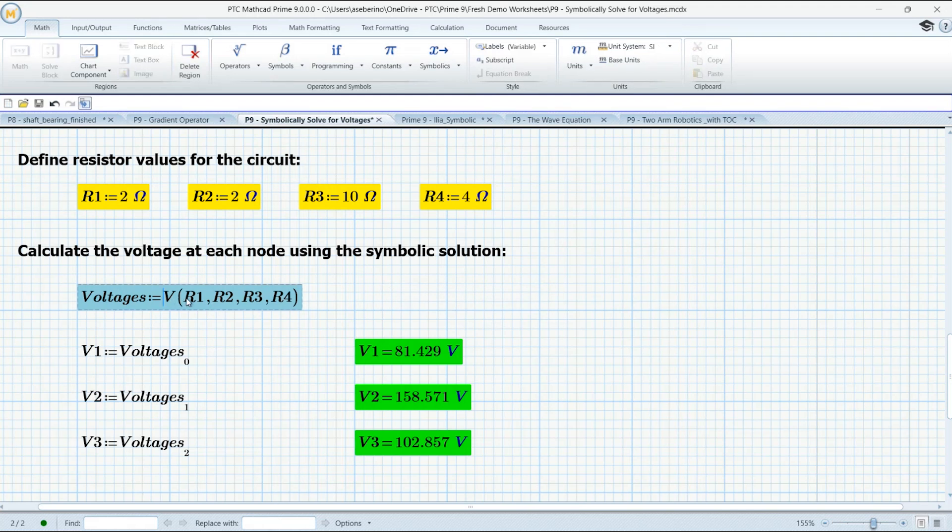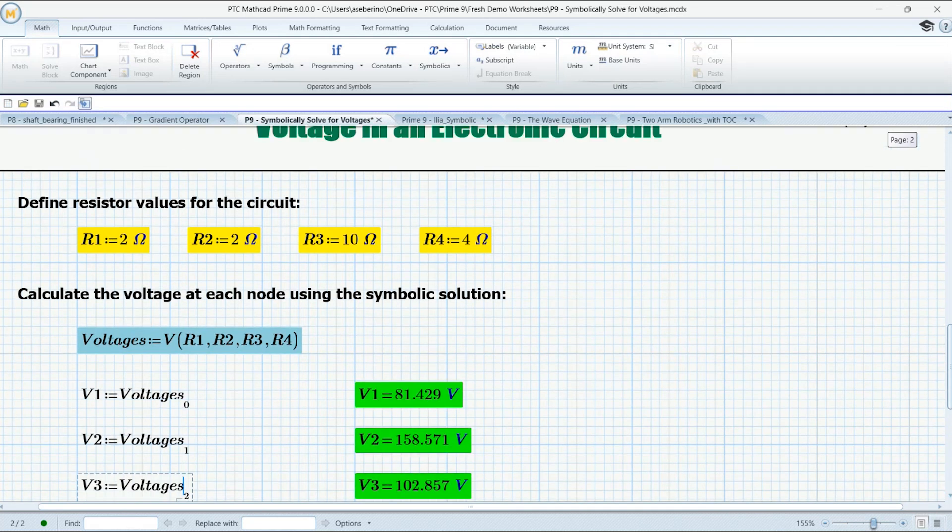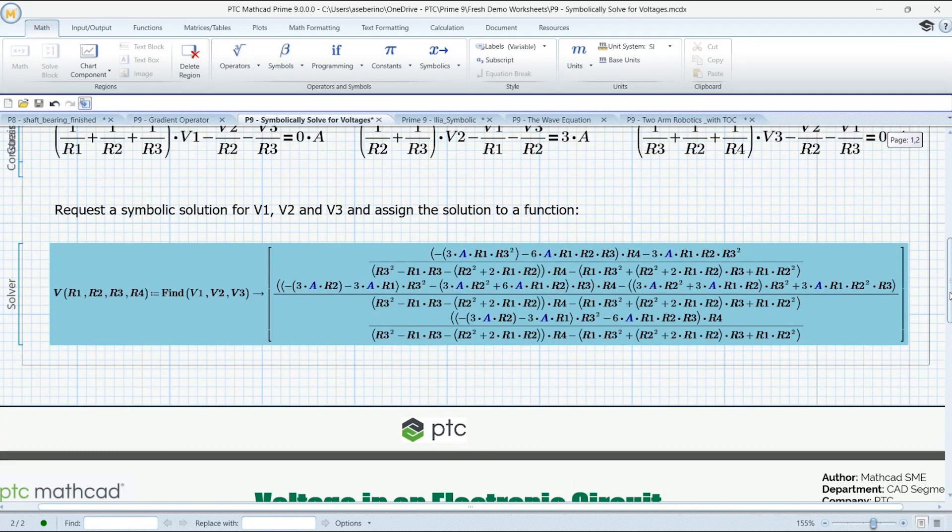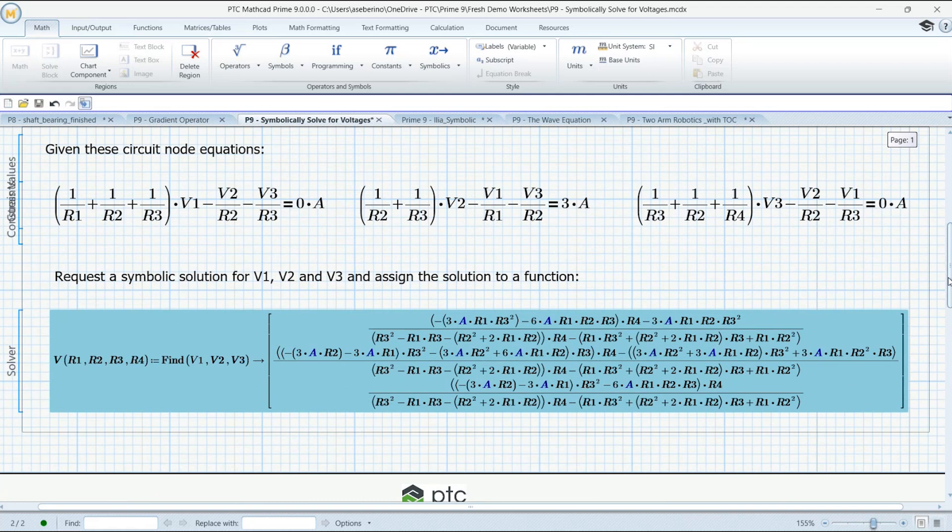So we're going to call the function and then assign it to a variable called voltages and then extract the zeroth component. That's v1. The first component, that's v2. The second component, or element, that's v3. And then we can display those on the right. So now if any of those resistor values change, our voltages will update, but we can see exactly how the voltages are being calculated. Okay. All right. So that is symbolically solving inside a solve block.